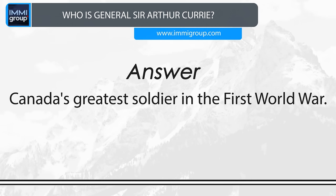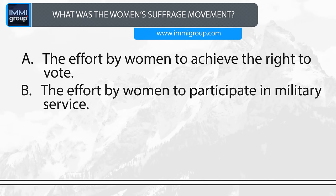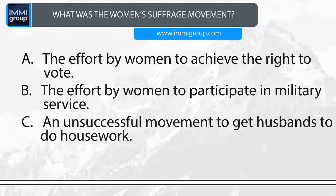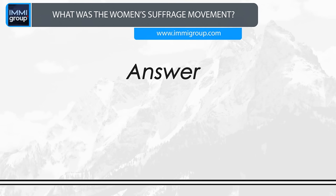What was the women's suffrage movement? A. The effort by women to achieve the right to vote. B. The effort by women to participate in military service. C. An unsuccessful movement to get husbands to do housework. D. The effort by women to be in Parliament. Answer: The effort by women to achieve the right to vote.